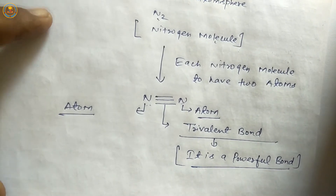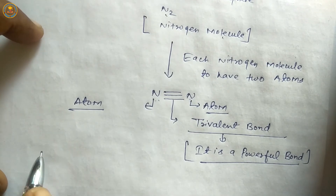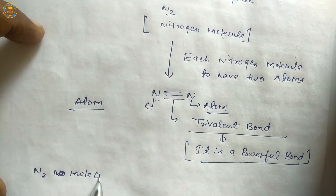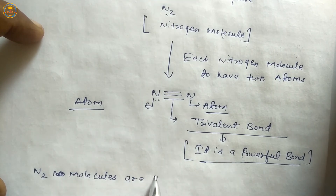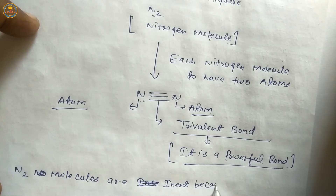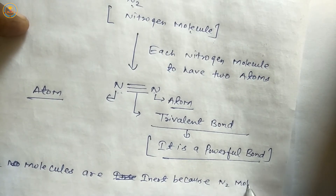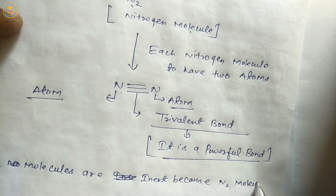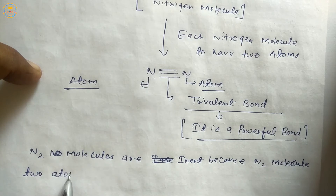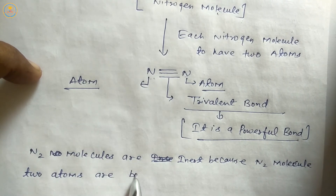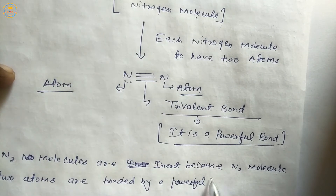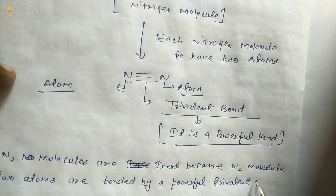Nitrogen molecules are inert — it means inactive — because the two atoms in each nitrogen molecule are bonded by a powerful trivalent bond.